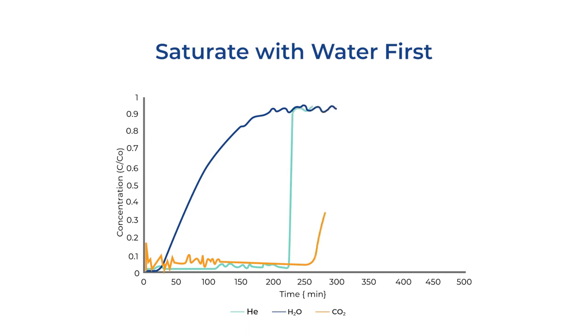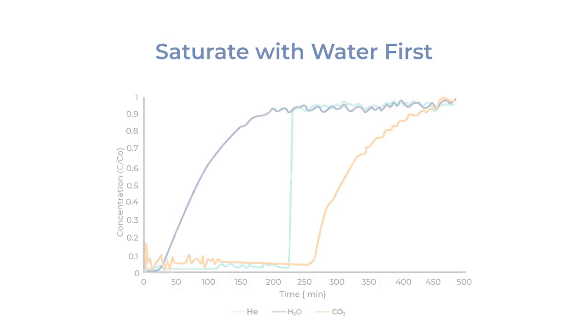Let's look at some data. Shown here, we have an example breakthrough curve where water is first introduced into the system. Then CO2 is introduced after saturation. The additional advantage of performing the measurement this way is that if there is a synergistic adsorption of water and CO2 by your adsorbent, then the water will be completely saturated on the surface before introduction of CO2.